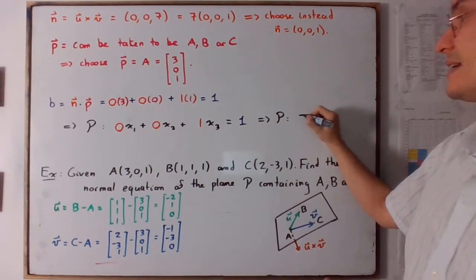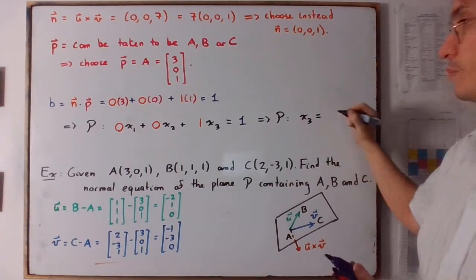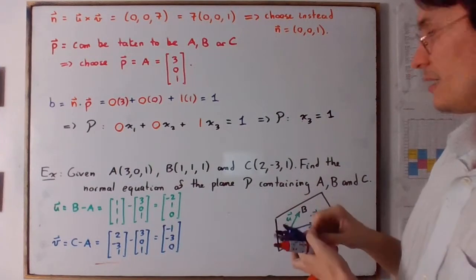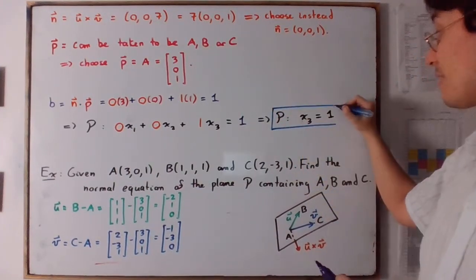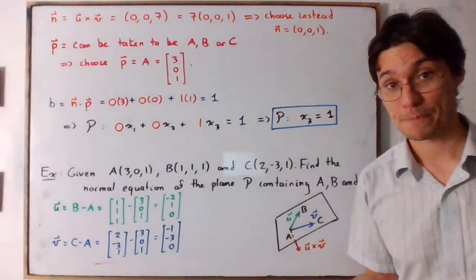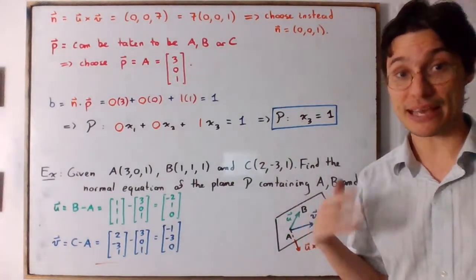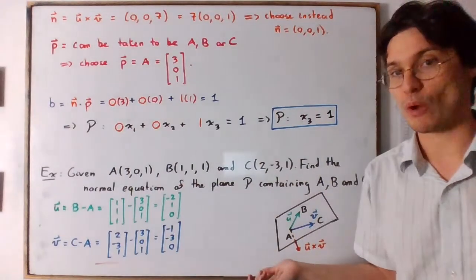The plane is simply x₃ equals 1. Which what you have to imagine here is that what it means is that x₁ and x₂ can be any real value, but x₃ has to be equal to 1. So in other words, it's the plane that is parallel to the x₁, x₂ plane, but has an x₃ coordinate to be equal to 1.